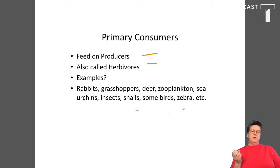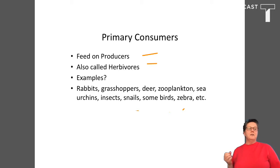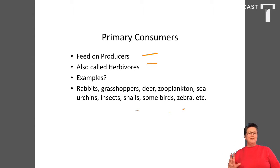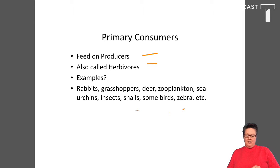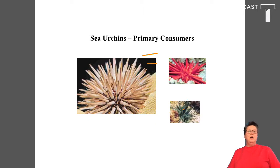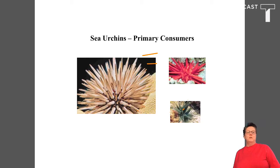Within marine systems, zooplankton are very important primary consumers, as we've talked about in lab. Sea urchins, insects, snails, and some birds — there are a lot of different kinds of animals that feed directly on producers. In marine ecosystems, sea urchins are a good example of organisms that are primarily primary consumers.